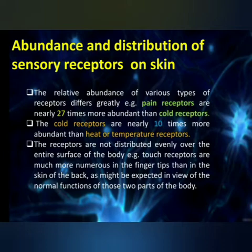The abundance and distribution of sensory receptors in the skin varies. Looking at relative abundance, pain receptors are 27 times more abundant than cold receptors, and cold receptors are 10 times more abundant than heat and temperature receptors. Regarding distribution, touch receptors are more concentrated in the fingertips, while back skin has fewer, depending on how that body part functions.